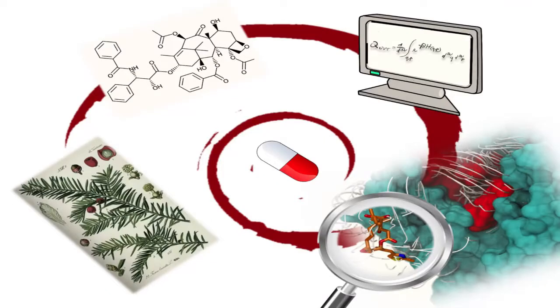Back in the 70s, at the National Cancer Institute in the United States, they found out that there was a plant, the Taxus brevifolia, capable of killing cancer cells. And I'm pretty sure how happy they were at the time.